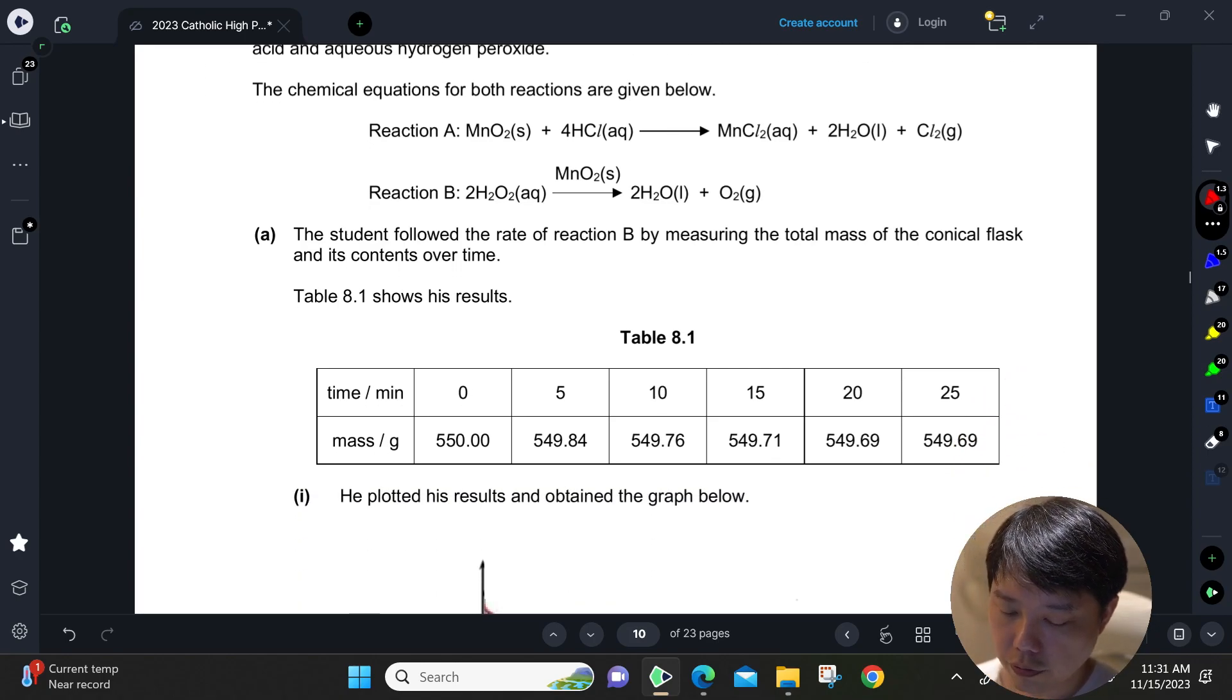The student then followed the rate of Reaction B by measuring the total mass of the conical flask and its contents over time. You have Table 8.1 showing you the results. You are monitoring the total mass.